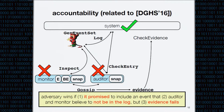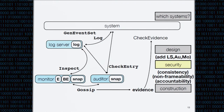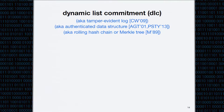These three definitions are mostly focused on consistency - the log server has one unified view of the log - and by allowing different parties to look at it in different ways we capture bad events. Our construction requires a building block we call a Dynamic List Commitment, or DLC. This primitive has gone by many names. Two concrete instantiations presented in the paper are a rolling hash chain - somewhat inefficient, linear in list length - or a good old-fashioned Merkle tree.